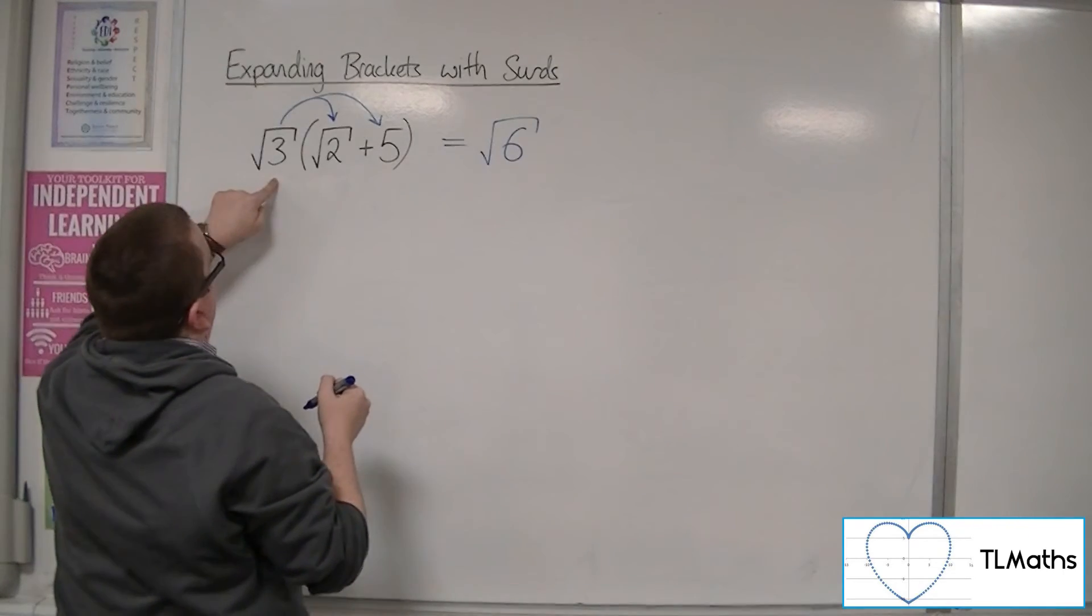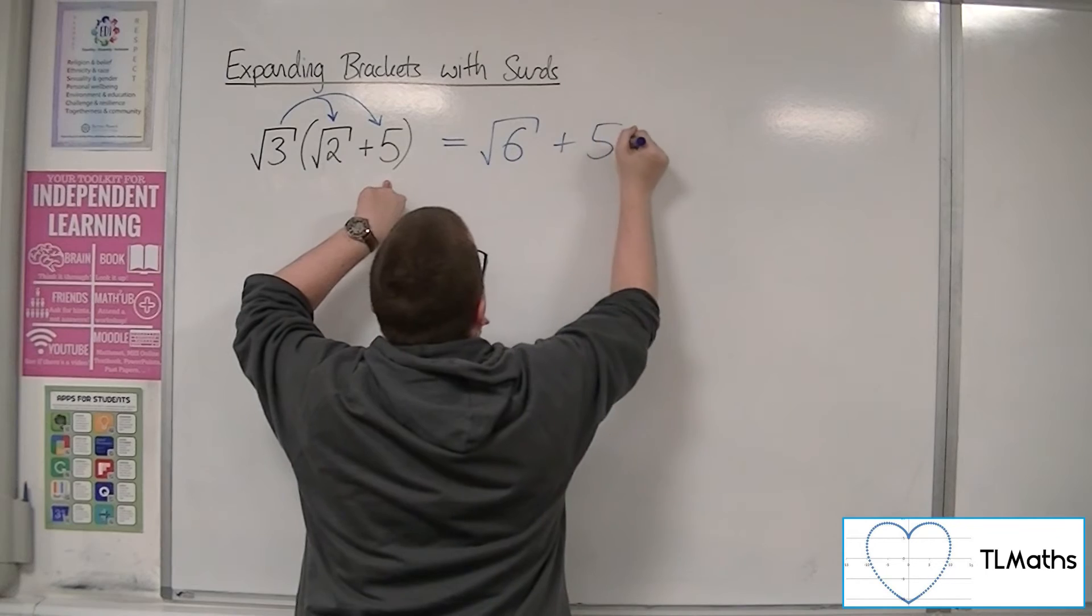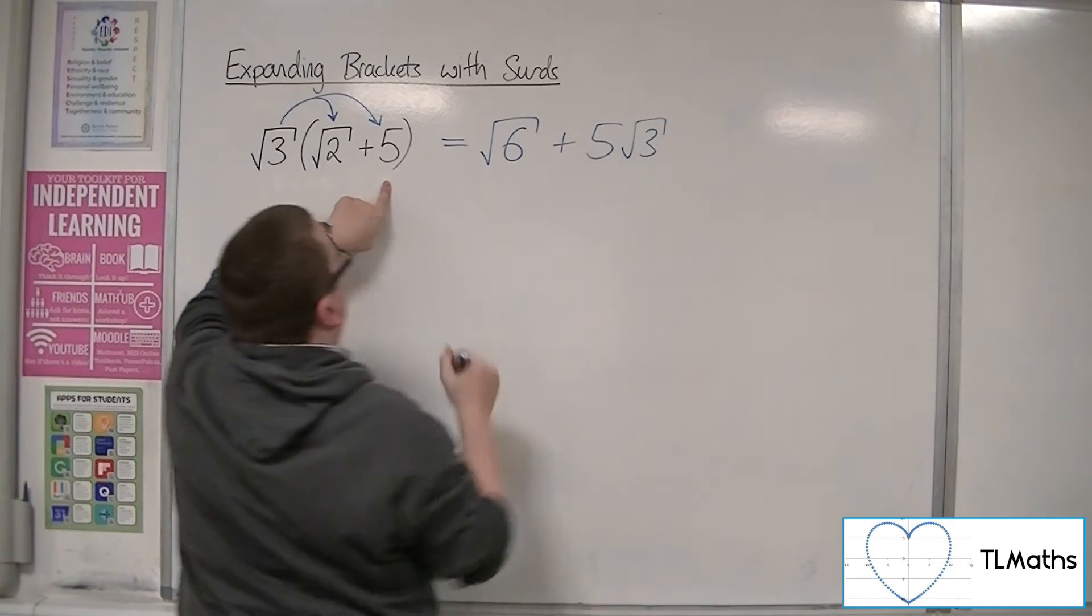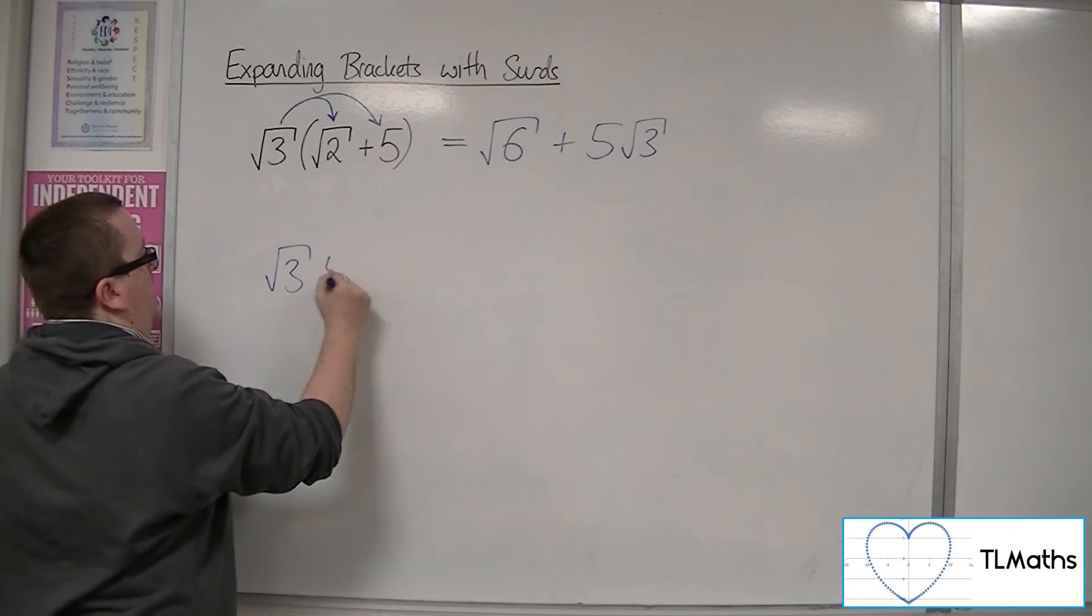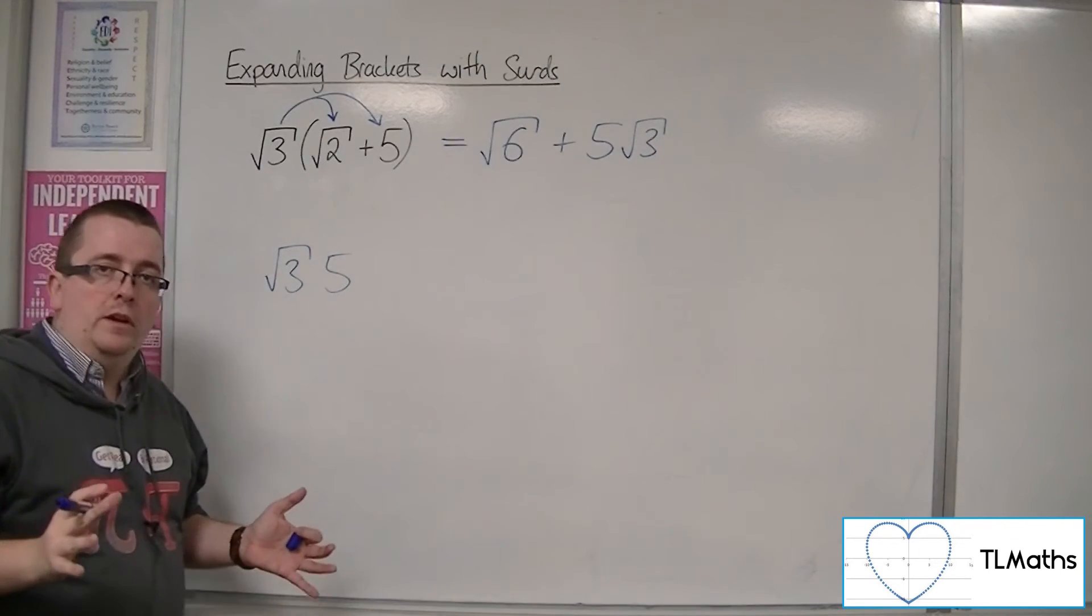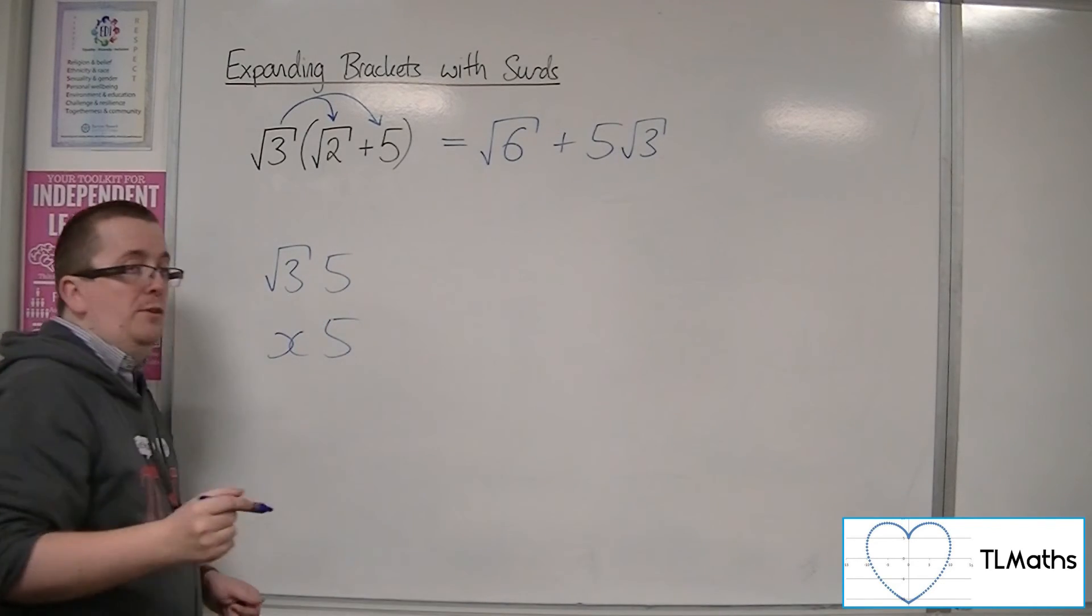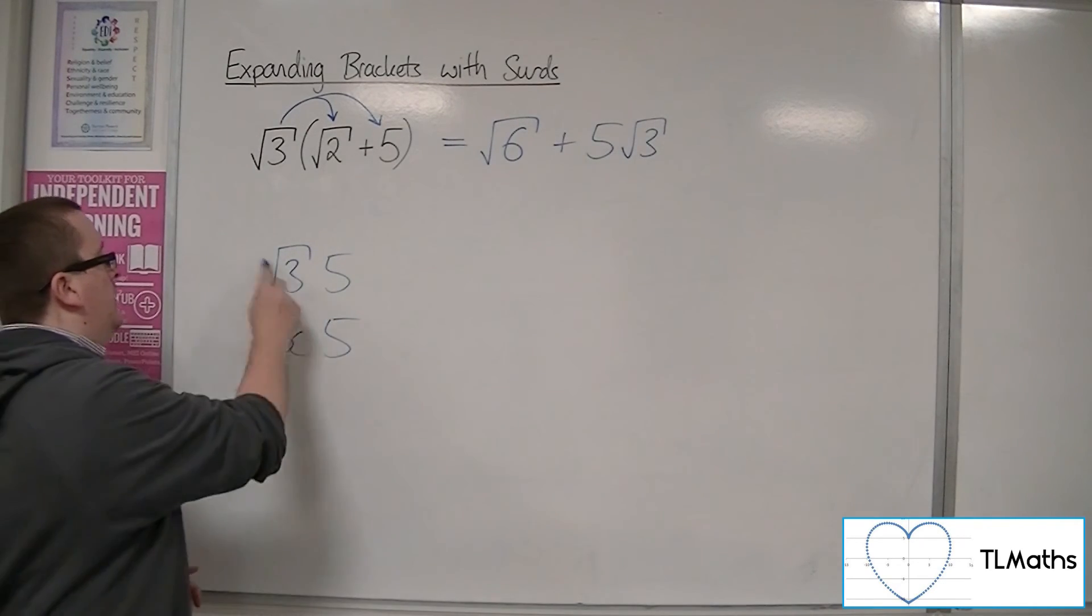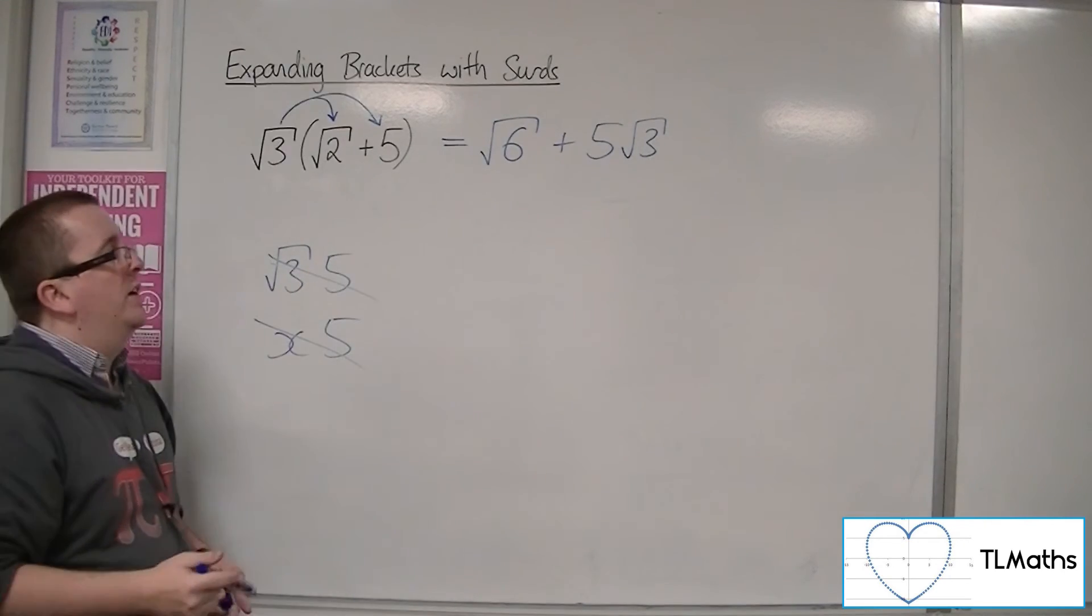And root 3 times 5 is 5 root 3. Make sure you avoid writing it as root 3, 5 for example. Much like you wouldn't write X5 when you mean 5X, so 5 root 3 is the way around that we're going to want it.